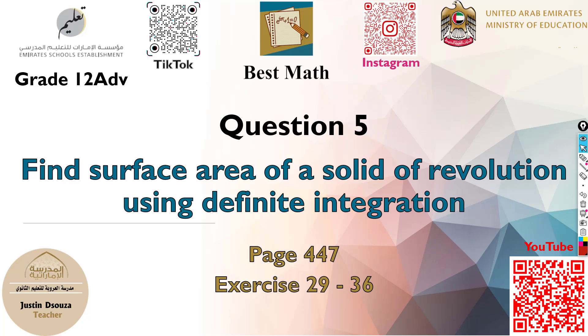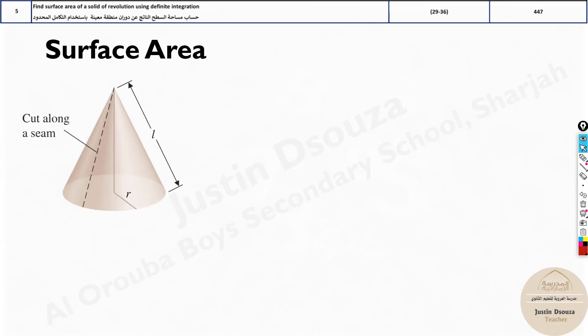Question 5 is to find the surface area of solids. The surface area formula is given here. It is the integral from a to b: 2π f(x), the given function, multiplied with the square root of 1 plus [f'(x)]² dx.